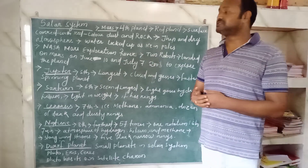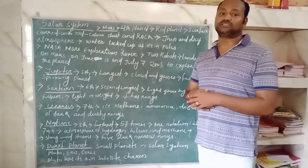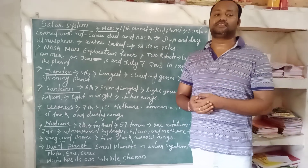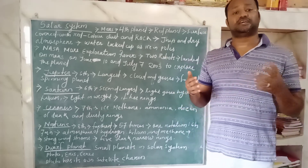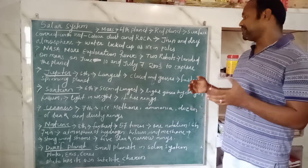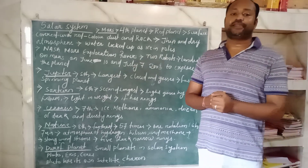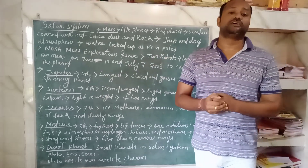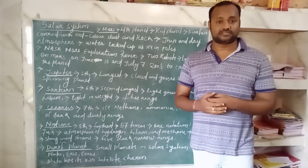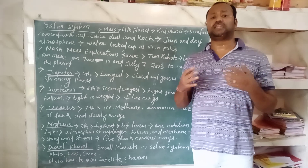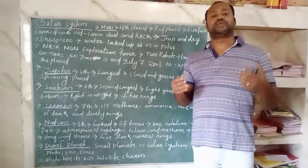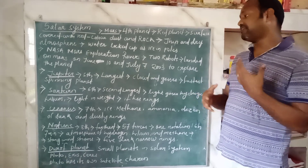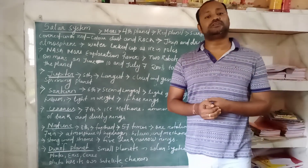The next planet in the solar system is Jupiter. Jupiter is the fifth planet in the solar system. It is the largest planet in the solar system. It is made up of clouds and gases, and it is the fastest spinning planet in the solar system.